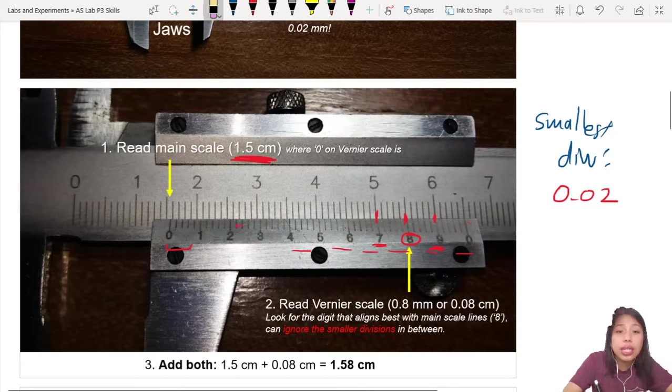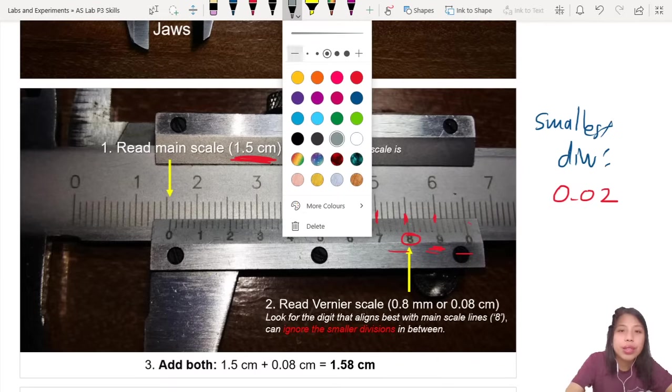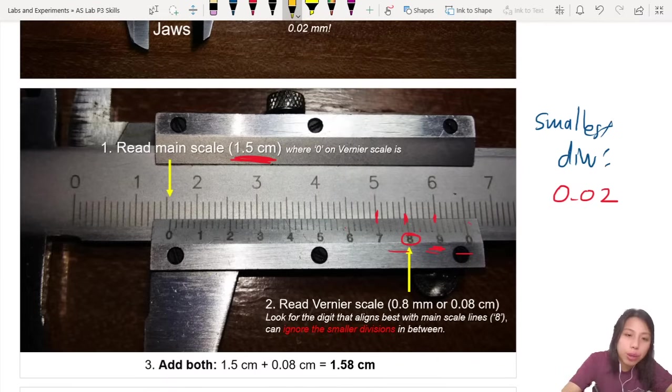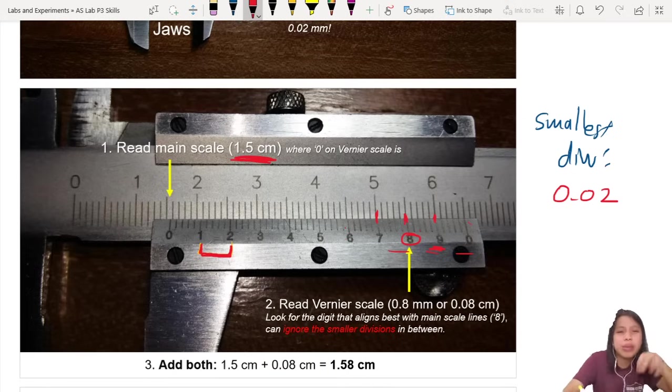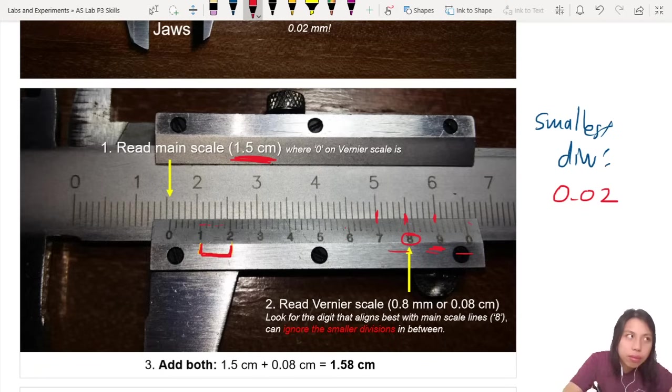Right. So that means your smallest division is actually this. What is this? This is our small division because we ignore the smaller one because MCKL vernier very extra. So what is this thing? 0.2, 0.4, 0.6, 0.8. Then what?